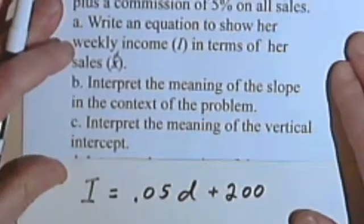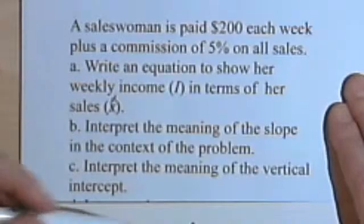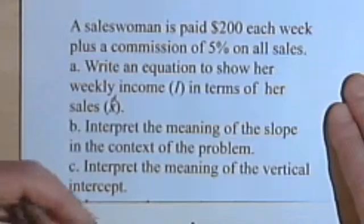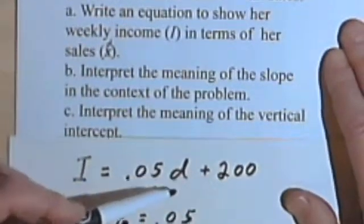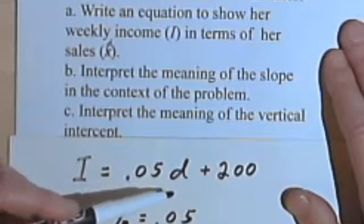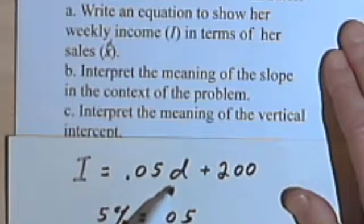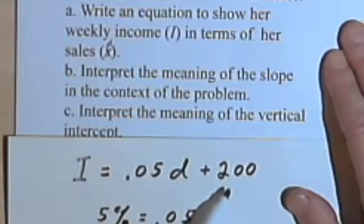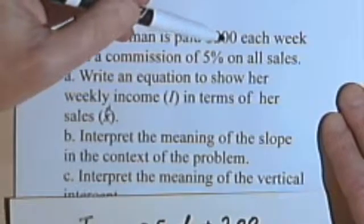Interpret the meaning of the vertical intercept. Okay, well, if this is a linear equation, we know the vertical intercept is 200. Remember, the vertical intercept happens when your independent variable, in that case it's going to be the d, when your independent variable is 0. So when this d is 0, meaning she hasn't sold anything, then the vertical intercept is going to be 200. So what that's telling you is that she earns $200 each week...